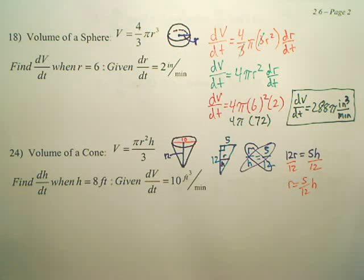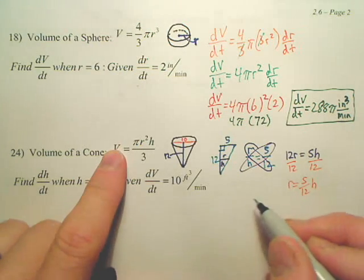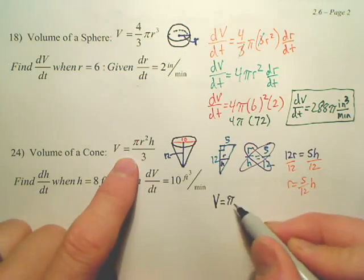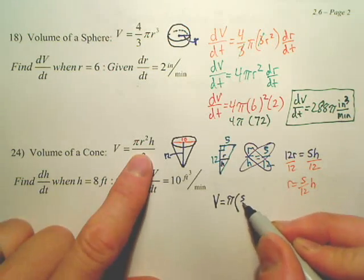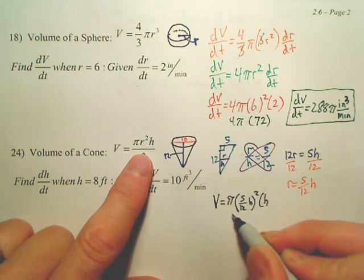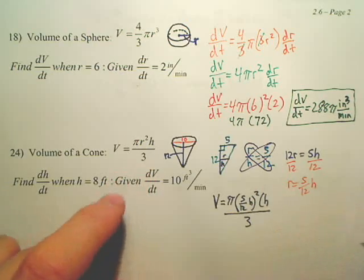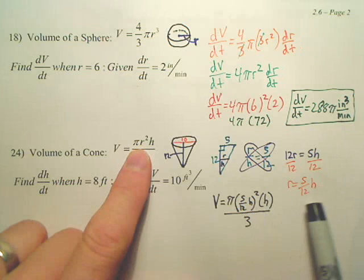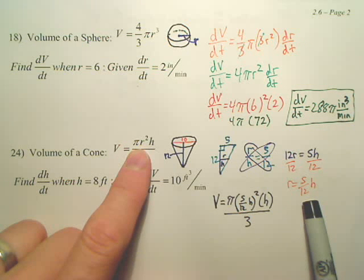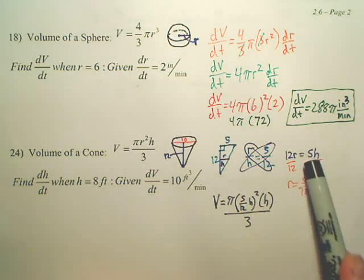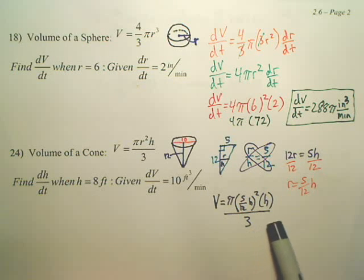Because if I go back to my original formula, V equals pi, I want to replace R with 5 over 12H. Do you see now, this equation, instead of R, I now have it in terms of H. It's called substitution. We made an equation due to proportions, found R in terms of H, and now we have an equation in all H's.